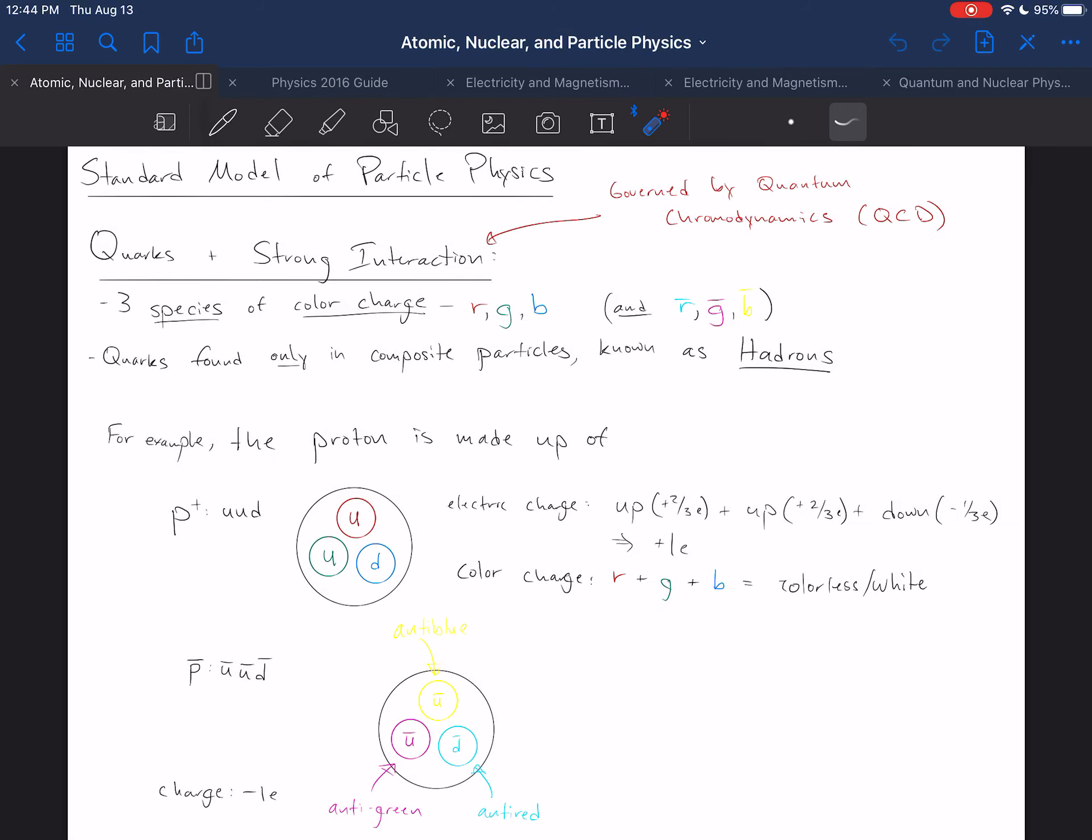Alright, in the last video we introduced the idea that quarks interact strongly. They interact according to the strong interaction, and they have a particular color charge: red, green, or blue, or anti-red, anti-green, and anti-blue, that determine whether the particle is allowed if it occurs.